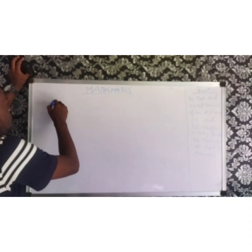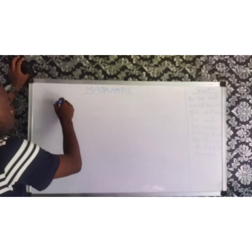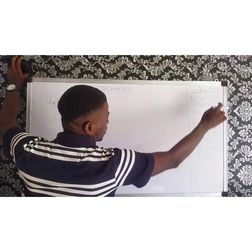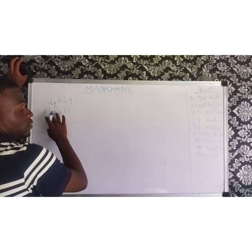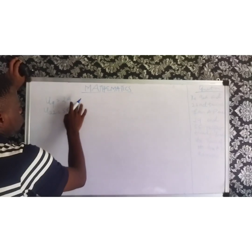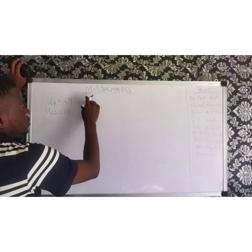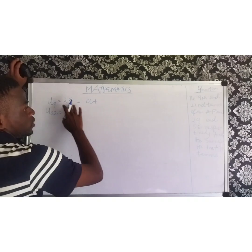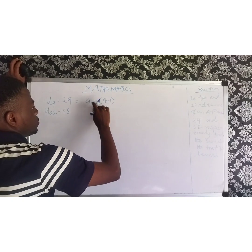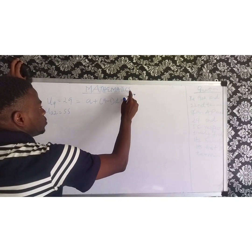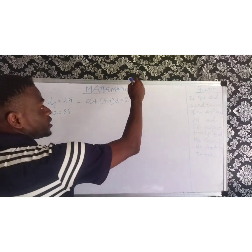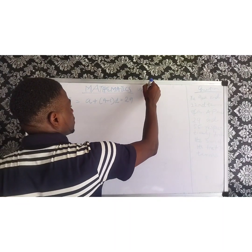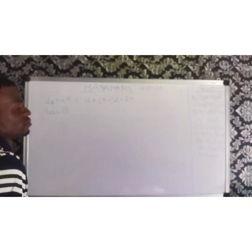Now we have the first one, U9, the 9th term, equal to 29. And U22 equal to 55. Automatically, write A plus, the 9th term is 9 minus 1, times D, equal to 29. You write it in form of arithmetic progression before you now lead to the sum. Our arithmetic progression formula is A plus bracket N minus 1 times D.